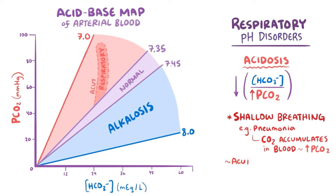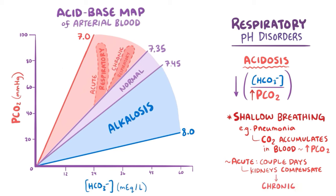Respiratory acidosis has an acute phase lasting just a few days. The kidneys recognize the decreased pH and compensate by retaining more bicarbonate, which rises above 26 mEq/L. This brings the pH as close to the normal line of 7.35 as possible, but it takes a few days for the kidneys to accomplish this, so it's considered the chronic phase of the condition.